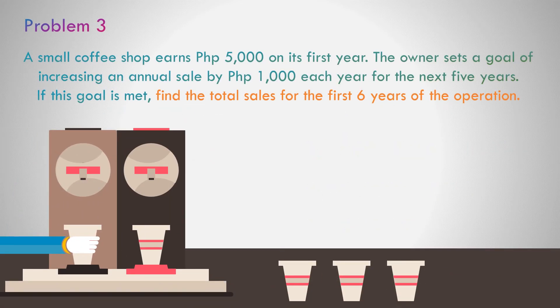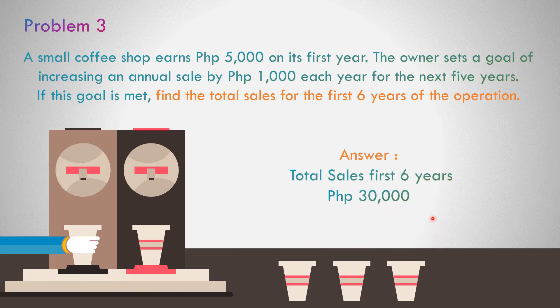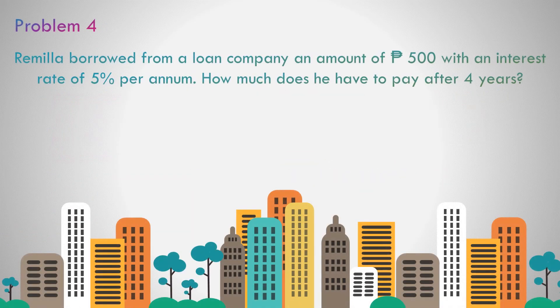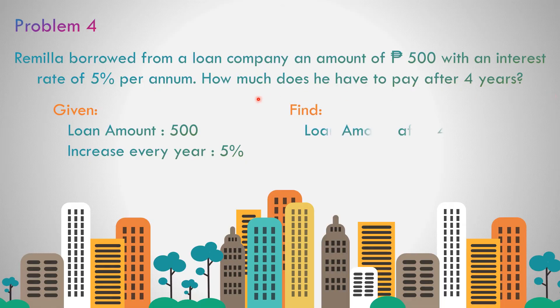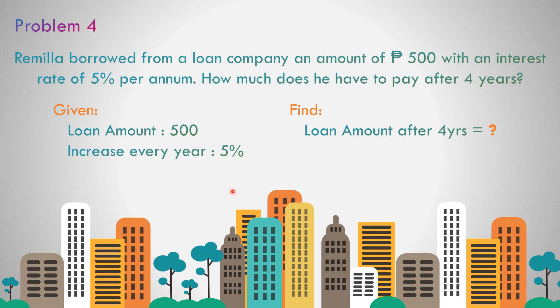The total sales for the first 6 years of operation equals 30,000. Problem number 4: Remilia borrowed from a loan company an amount of 500 pesos with an interest rate of 5% per annum. How much does he have to pay after 4 years?